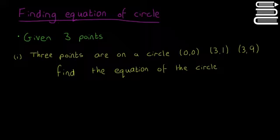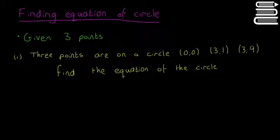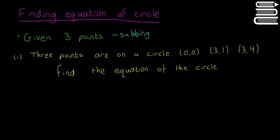Here we're going to look again at finding the equation of a circle, but at a specific time when we're given three points. So if you're given three points and you want to find the equation of a circle, this is the quickest method to do it. This is the same as in the intro video — subbing the points in. So that's the method we're going to employ.